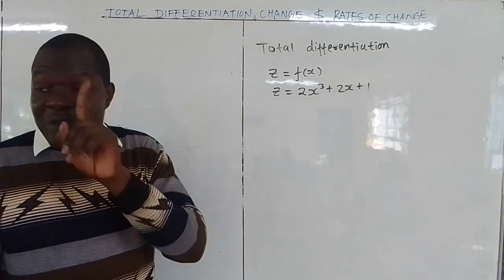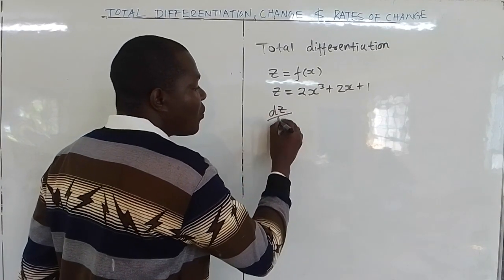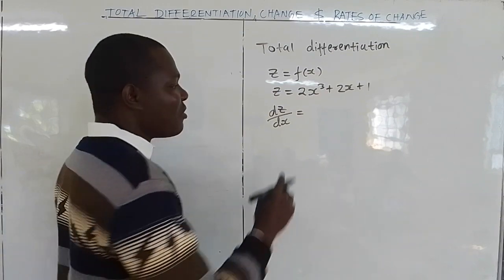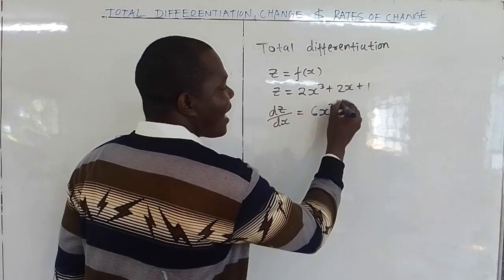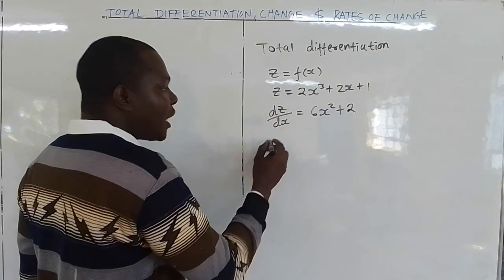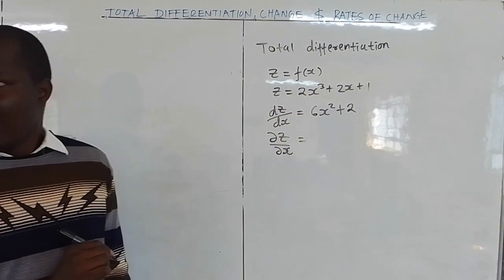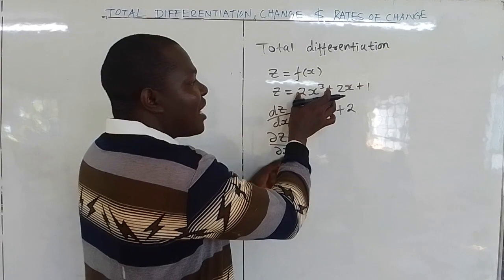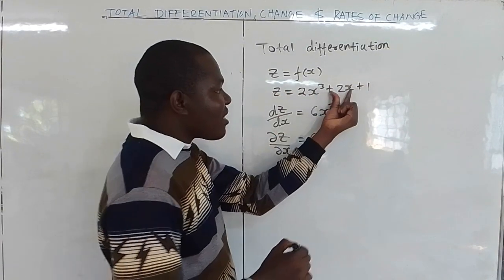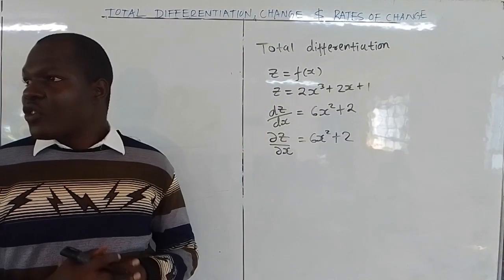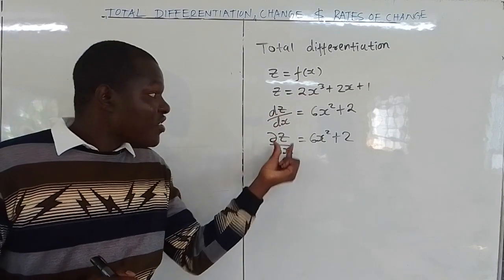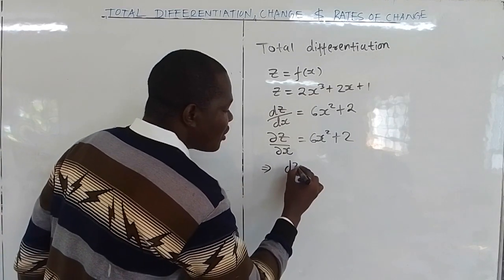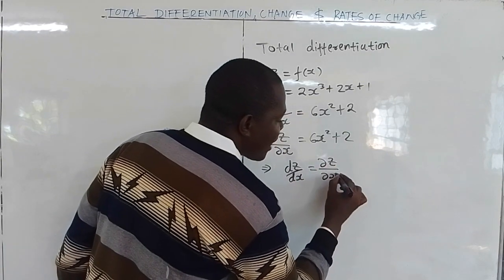If z is a function of x only, and you differentiate z with respect to x — that is ordinary differentiation, meaning everything is considered a variable and we have only one variable — you get 6x squared plus 2. If you differentiate z partially with respect to x, only x is a variable, and you also get 6x squared plus 2. So the partial derivative is the same as the ordinary derivative when there is a single independent variable. That means dz/dx is the same as ∂z/∂x.